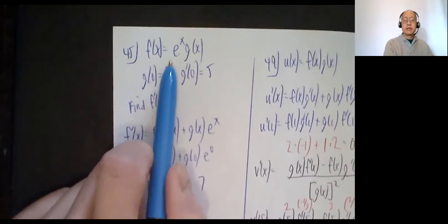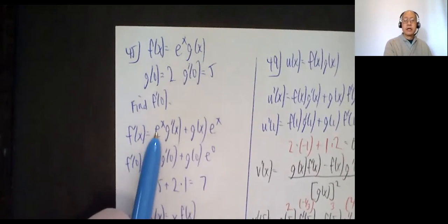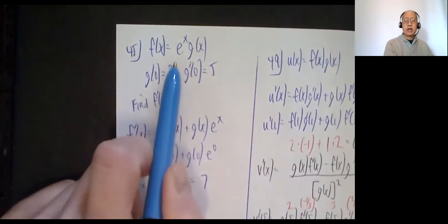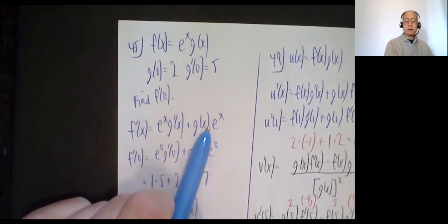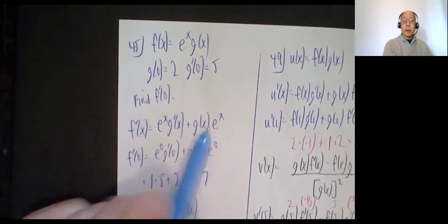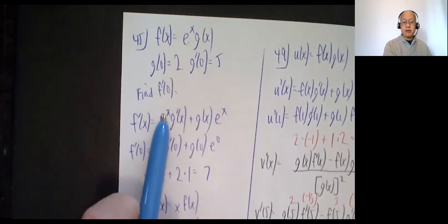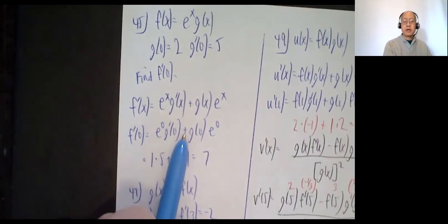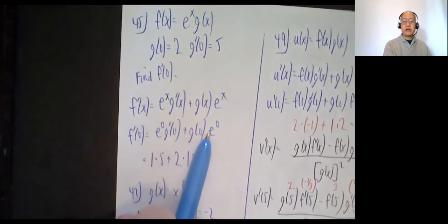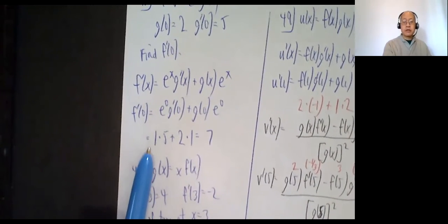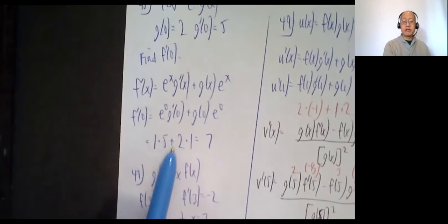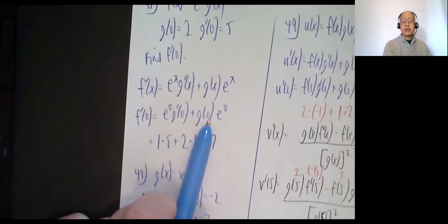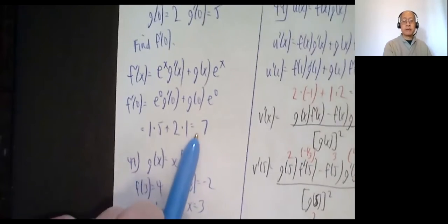So f prime of x by the product rule is first times the derivative of the second: e to the x times g prime of x, plus the second function g of x times the derivative of the first, which is just e to the x. Now if I want f prime of 0, I plug in 0 everywhere. So e to the 0 times g prime of 0, plus g of 0 times e to the 0. E to the 0 is 1, times g prime of 0, which is 5, plus g of 0, which is 2, times 1. That comes out to be 7.